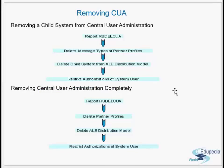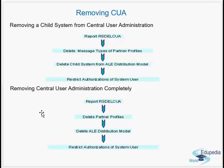To remove central user administration completely: you run the same report, delete all partner profiles, delete the entire ALE distribution models, and restrict authorizations of all system users used in RFC destinations. Here you delete everything. For deleting one child system you only delete the distribution model and partner profile of that child system. When you want to completely delete the CUA, you delete all partner profiles and all ALE distribution models.